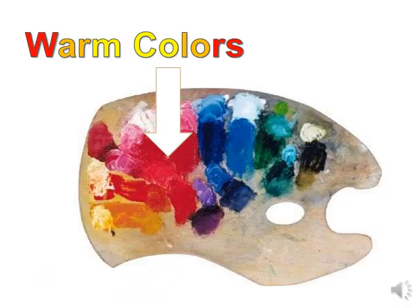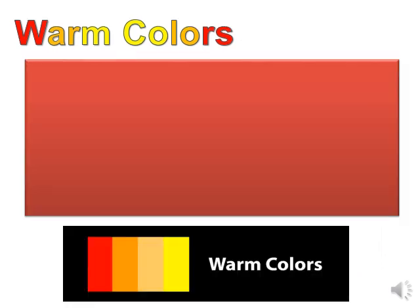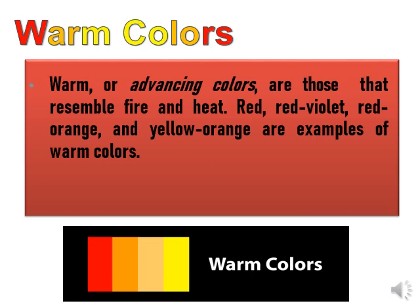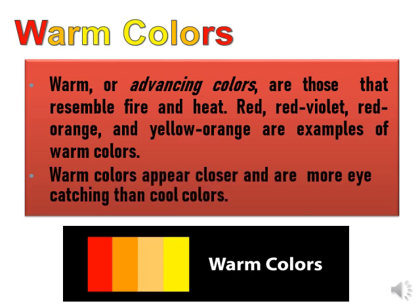We will start with the warm colors. Warm or advancing colors are those that resemble fire and heat. Red, red-violet, red-orange and yellow-orange are examples of warm colors. Warm colors appear closer and are more eye-catching than cool colors.